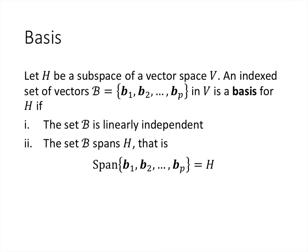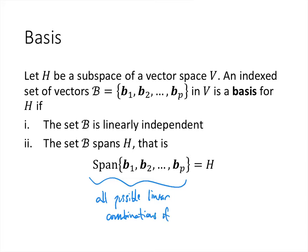This leads us to the definition of a basis in a vector space. If H is a subspace of a vector space V — meaning H is a subset that is itself a vector space under the same operations — then a set of vectors is a basis for H if two things are true: that set is linearly independent, and it spans H. In other words, all linear combinations of the basis vectors b₁, b₂, …, bₚ give exactly H. If the span equals H, we say the set is a basis for H.